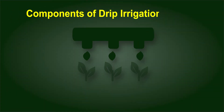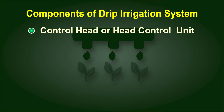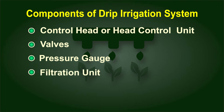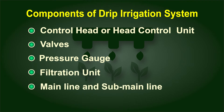Now let us understand the various components of the drip irrigation system. The drip irrigation system consists of the following components: control head or head control unit, valves, pressure gauge, filtration unit, mainline and sub-mainline, and emitters.